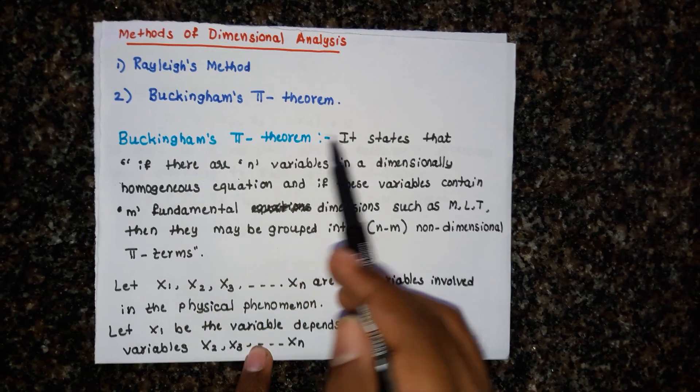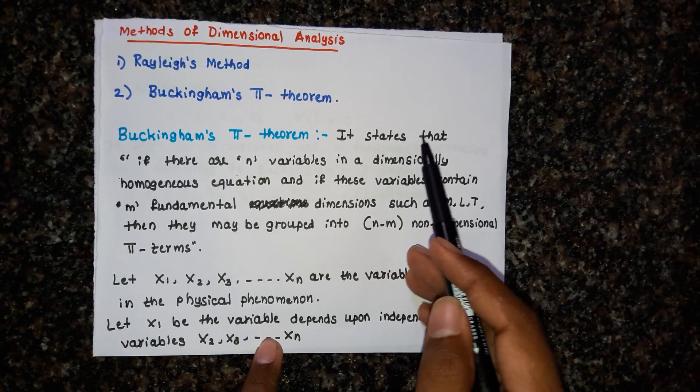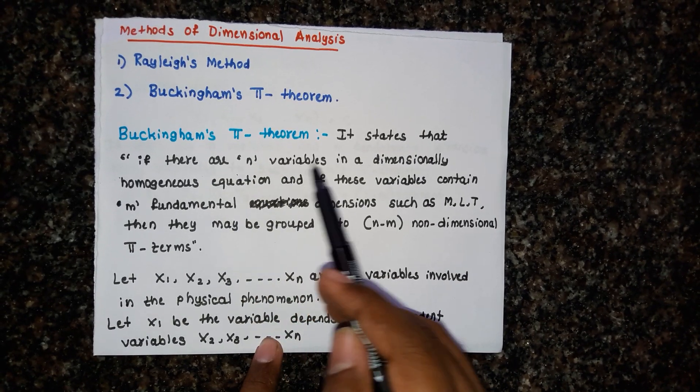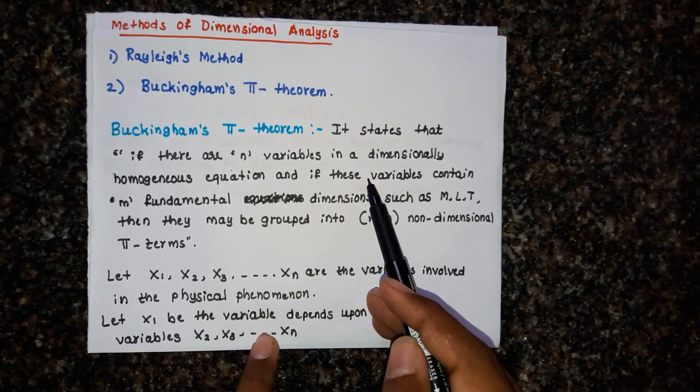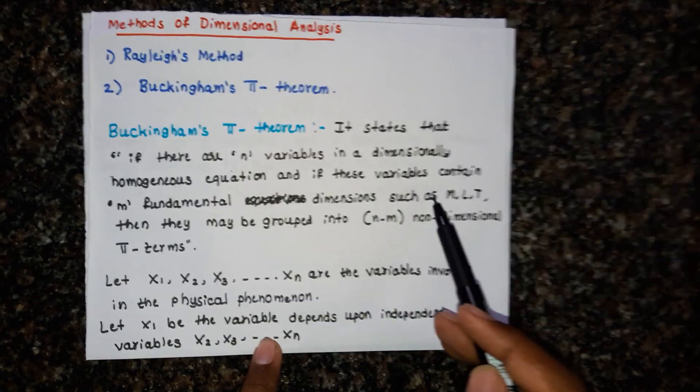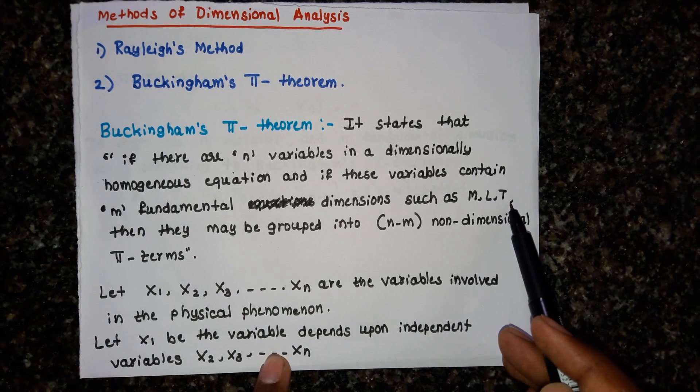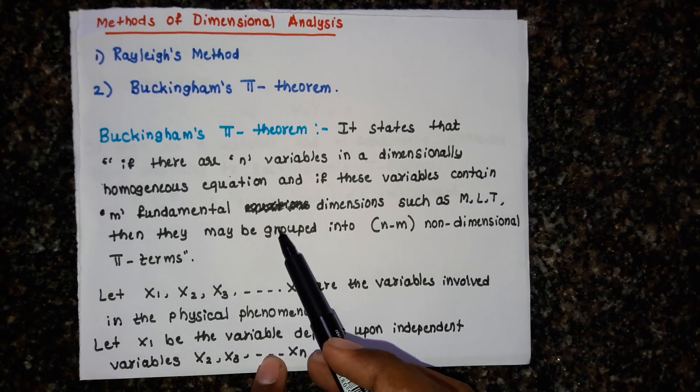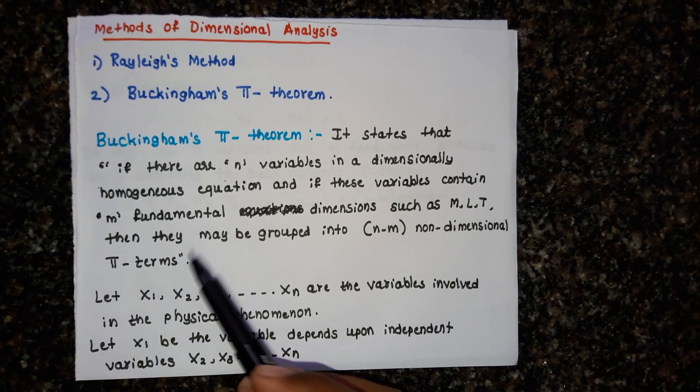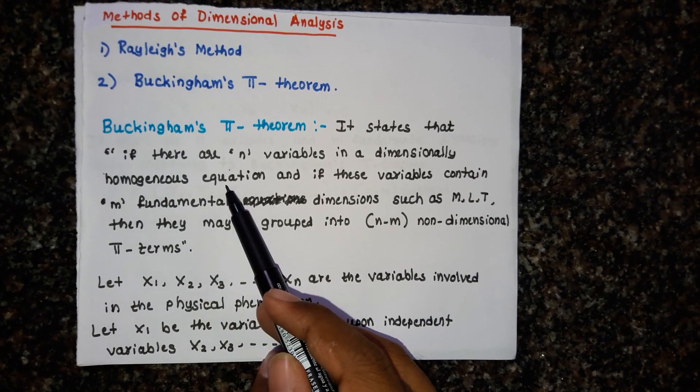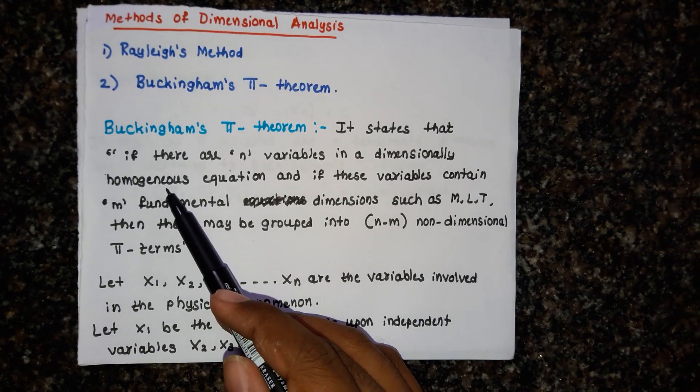Buckingham Pi theorem states that if there are n variables in a dimensionally homogeneous equation and if these variables contain m fundamental dimensions such as mass, length, and time, then they may be grouped into n minus m non-dimensional pi terms. The equation should be homogeneous, please remember this.